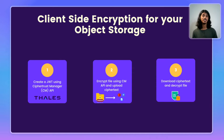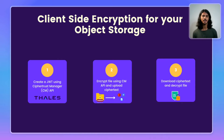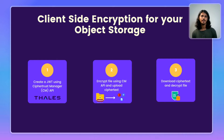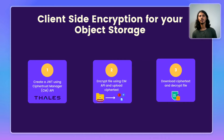It's going to be a three-step process. The first part is to get a JSON Web Token, or JWT, and authenticate with the API. Then we upload our files to the API to encrypt them, and we get ciphertext back.